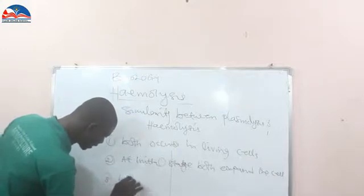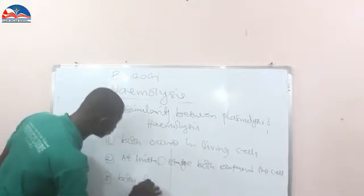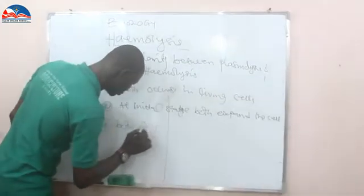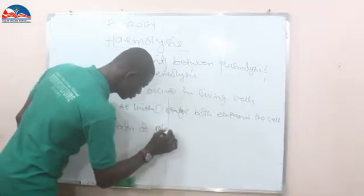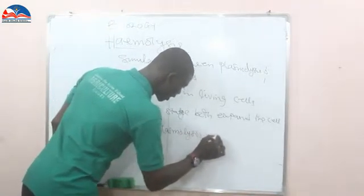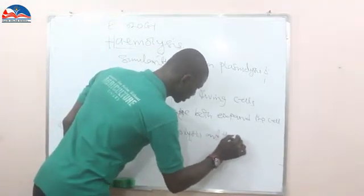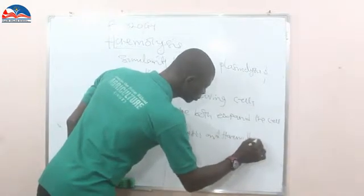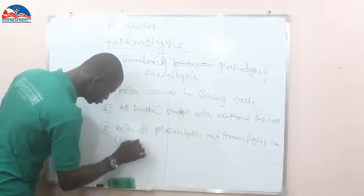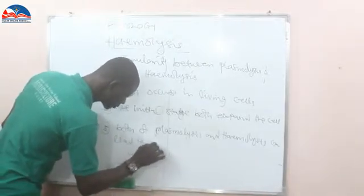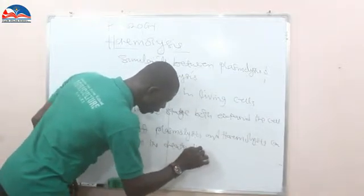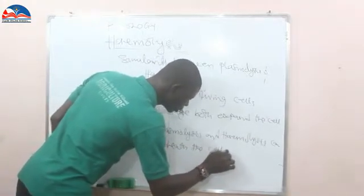Similarity number three: both hemolysis and plasmolysis can lead to the deaths of the cells involved.